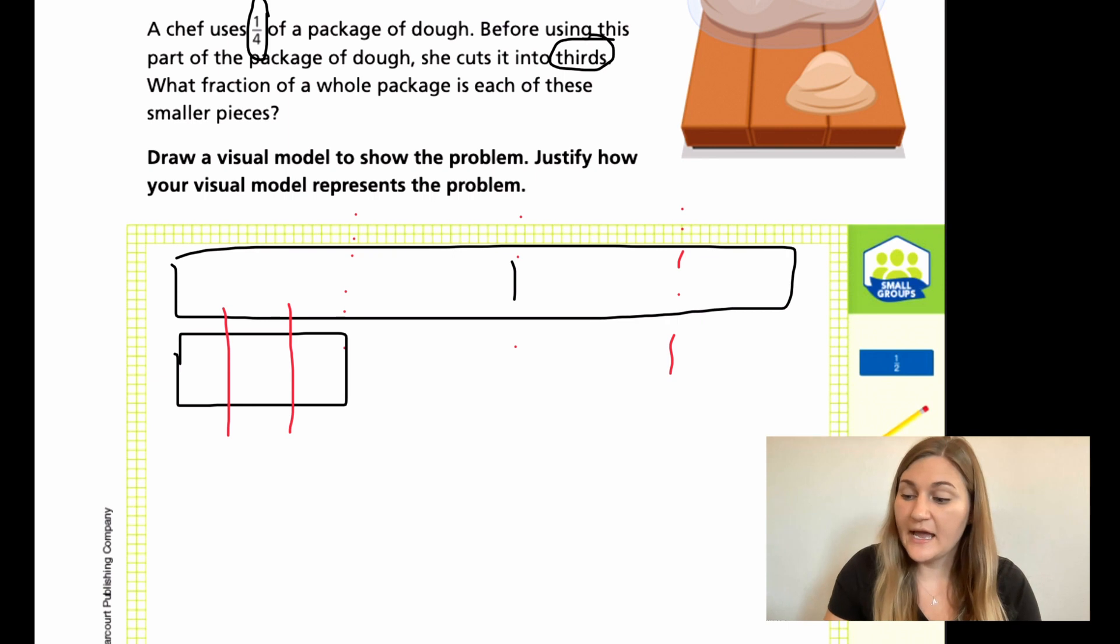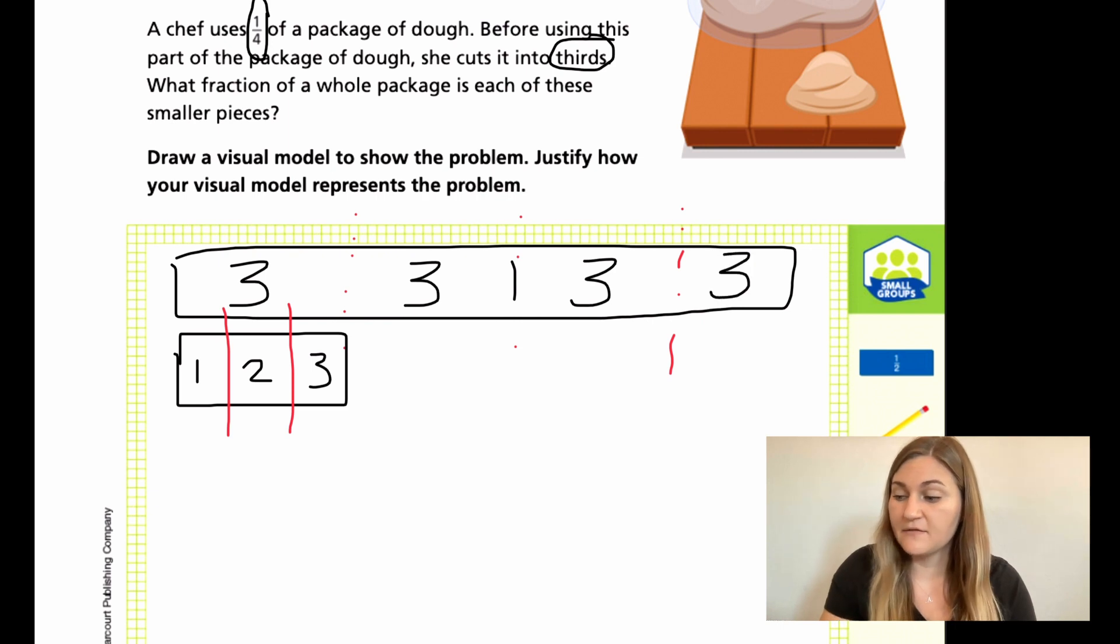So I know that I have one, two, and three pieces here. So this whole thing, I would have three. That would repeat. In this section here, I would have three. In this section, I would have three. In this section, I have three. So how many total pieces would there be in this package? I would have three, three, three, three. That would be 12 pieces.